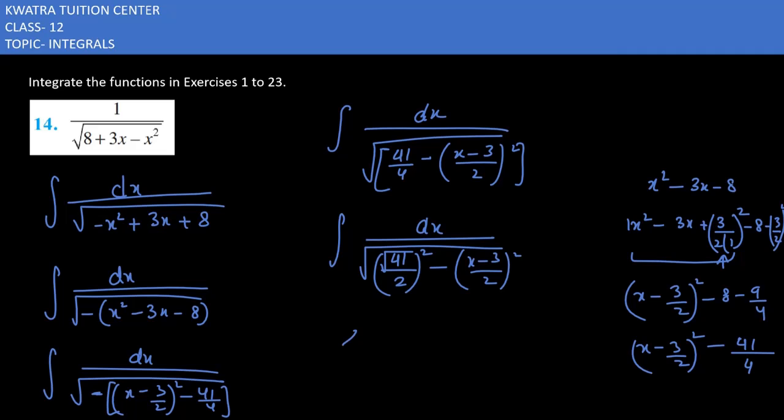You will write the direct answer: sine inverse of (x minus 3/2) over (root 41/2), plus a constant. The final answer is sine inverse of (2x minus 3) over root 41, plus C.